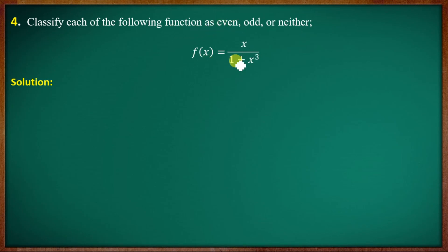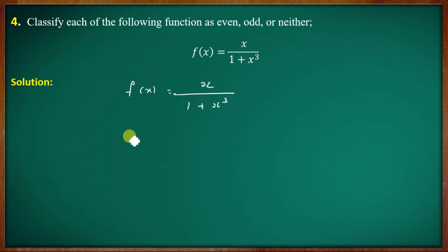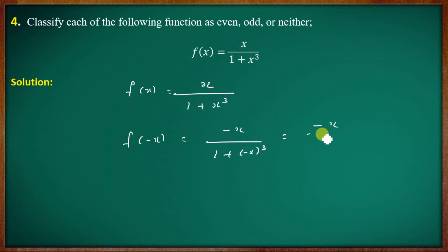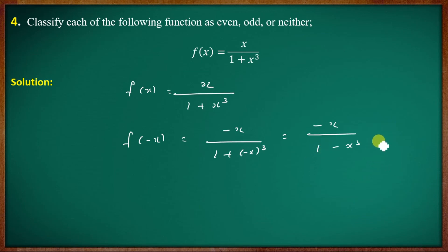Classify the function f of x equal to x by 1 plus x cubed. Substituting x equal to minus x: f of minus x equals minus x by 1 plus minus x cubed, which equals minus x by 1 minus x cubed. Since this is neither equal to f of x nor equal to minus f of x, the function is neither even nor odd.